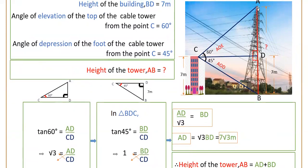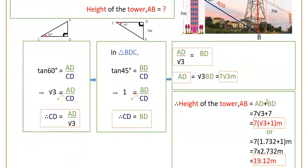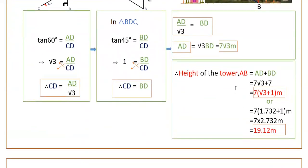AB is the height of the tower, which equals AD plus BD. Therefore the height of the tower AB equals 7 root 3 plus 7. Taking 7 as common: 7 into (root 3 plus 1) meters. Substituting root 3 equals 1.732, we get 7 into 2.732, which is 19.12 meters. So the height of the tower is 19.12 meters.